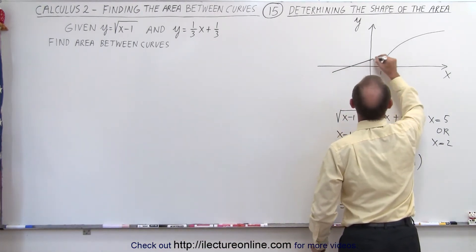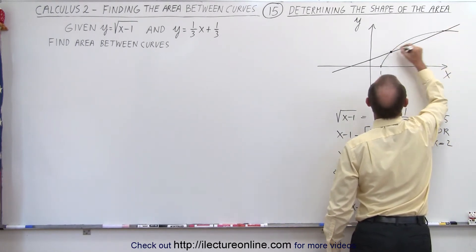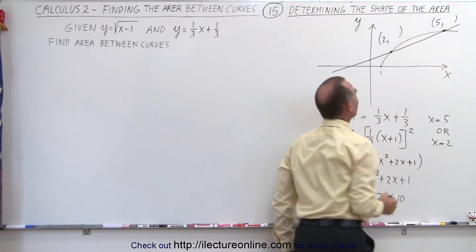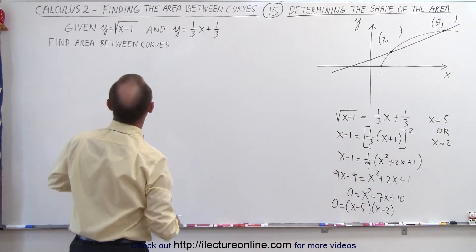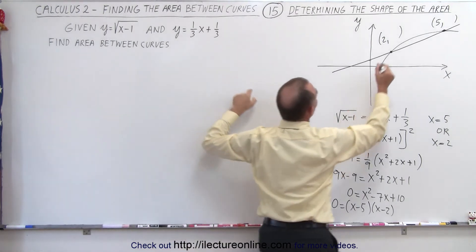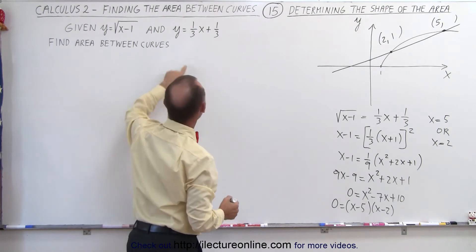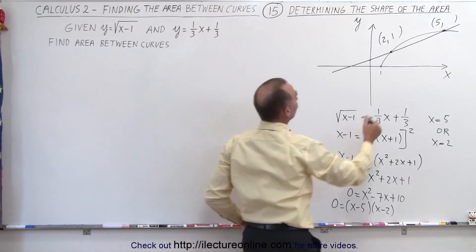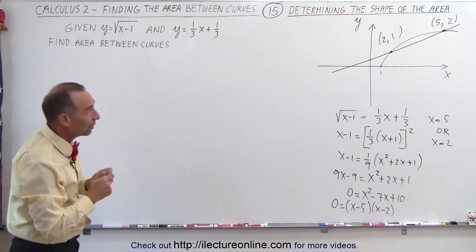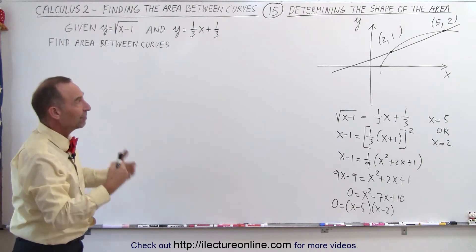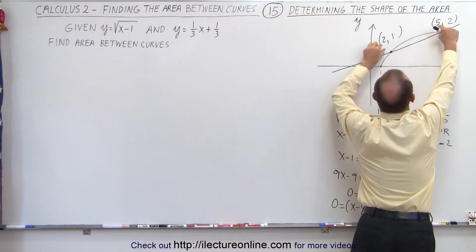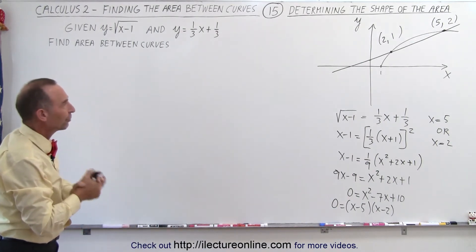The two functions cross at x equals 2 and x equals 5. Finding the y-coordinates: when x equals 2, y equals two-thirds plus one-third equals 1; when x equals 5, y equals five-thirds plus one-third equals 2. Those are the two crossing points. Notice it's not always clear how functions overlap or which way they curve, so you need to figure all that out before you can start integrating.